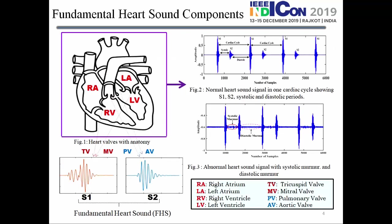Generally, the heart has four chambers: the right atrium, left atrium, right ventricle, and left ventricle. There are four valves: the tricuspid valve, mitral valve, pulmonic valve, and aortic valve. S1 occurs due to the closure of the tricuspid valve and mitral valve, while S2 occurs due to the closure of the pulmonic valve and aortic valve.